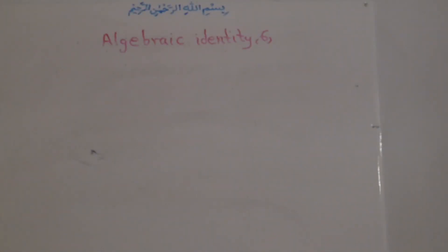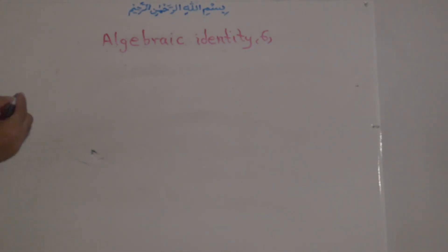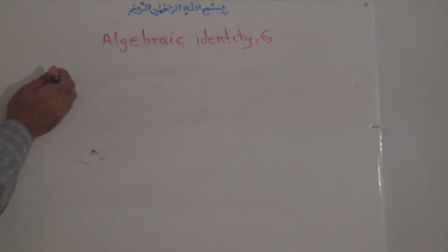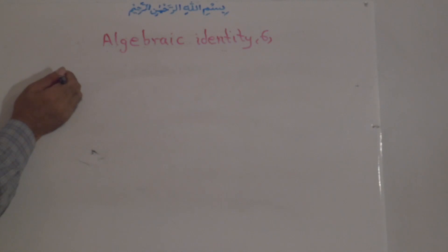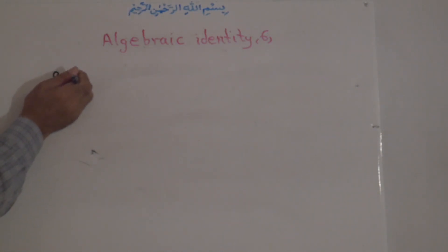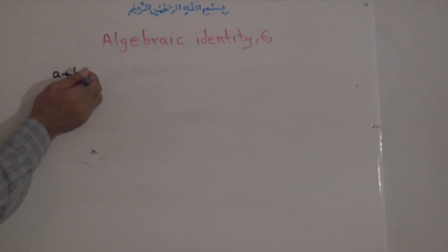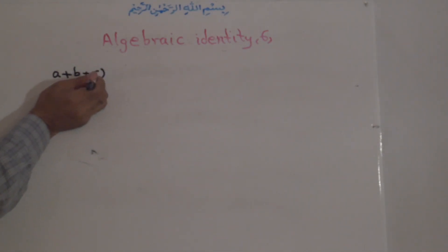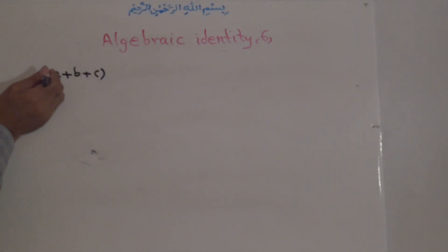Hi there, welcome to Math Class. Our title is Algebraic Identity Number 6. The algebraic identity is the power of 2 of a trinomial: A plus B plus C, all to the power of 2.